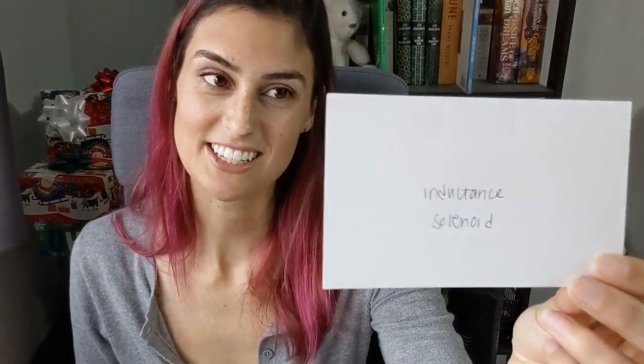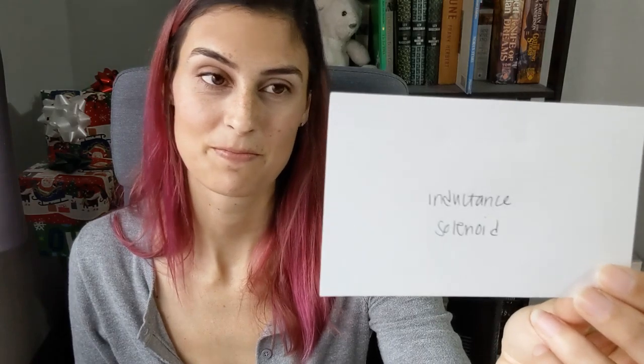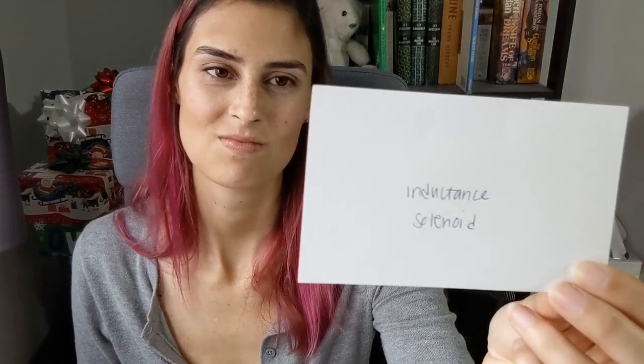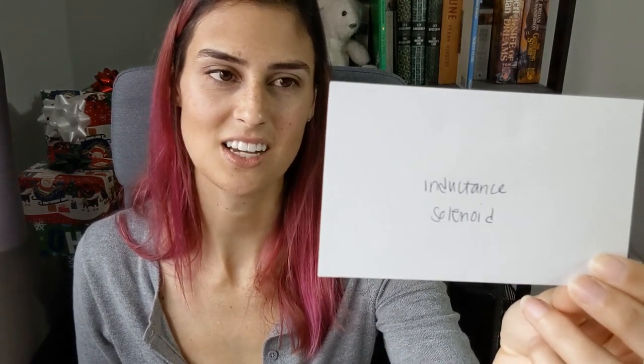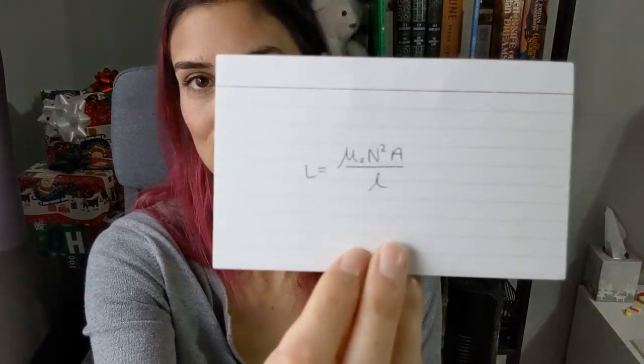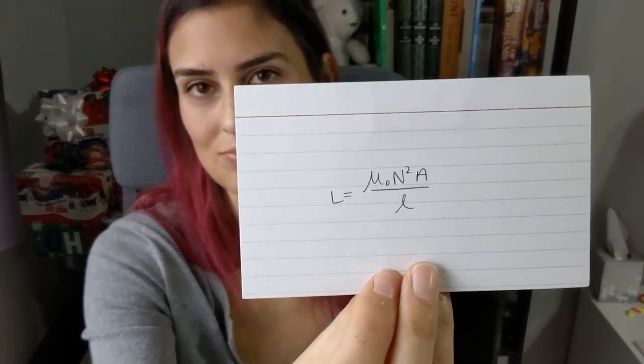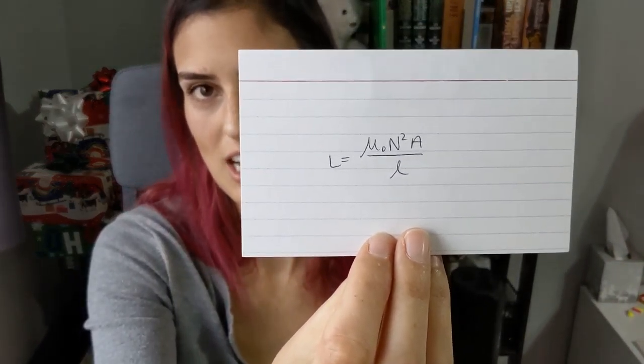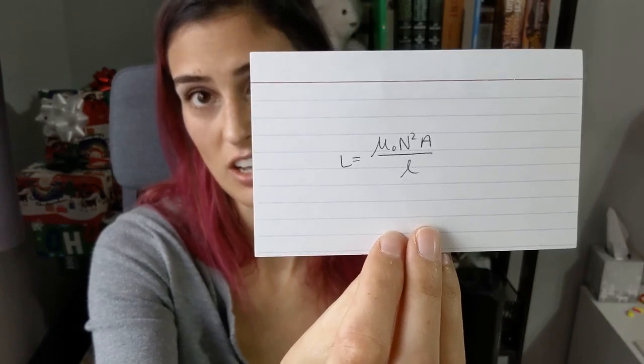Inductance of a solenoid: L equals mu naught n squared times A over little l, where n is the number of turns and A is the area.